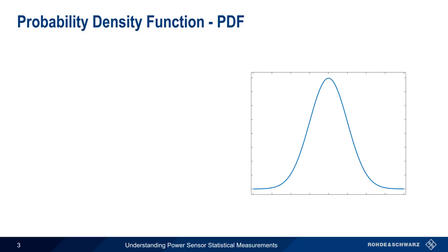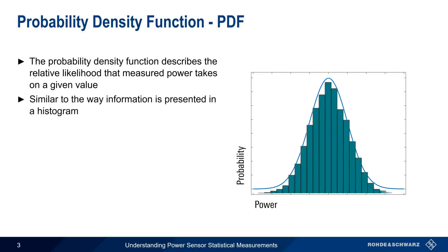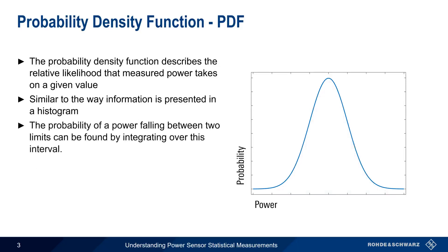The Probability Density Function describes the relative probability that measured power takes on a given value. The information contained in a PDF is similar to the information provided by a histogram, but shows continuous rather than discrete values. Using a PDF, we can find the probability of a measured power falling between two limits by integrating over this interval.